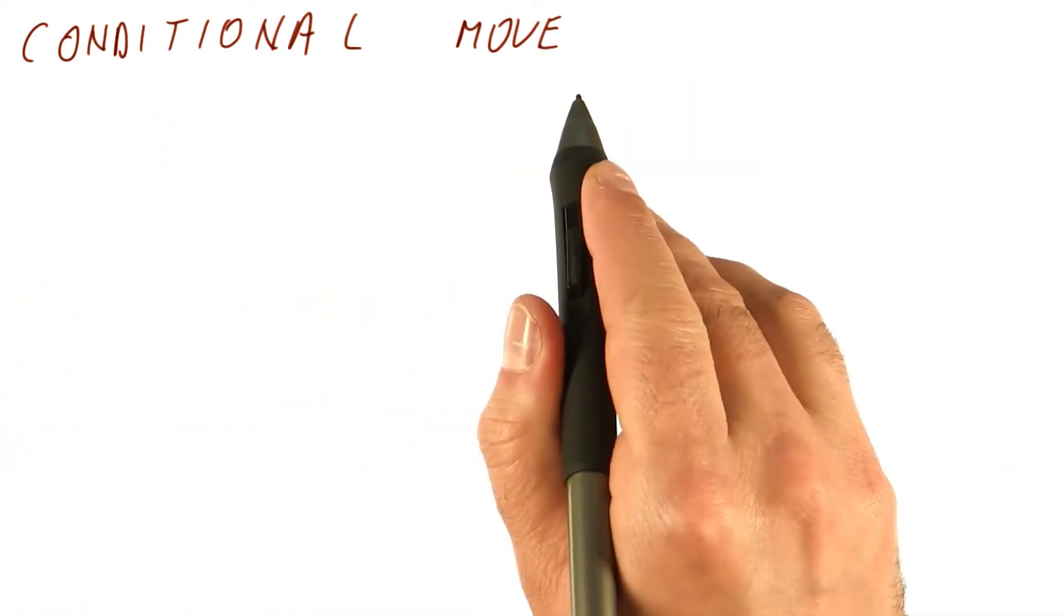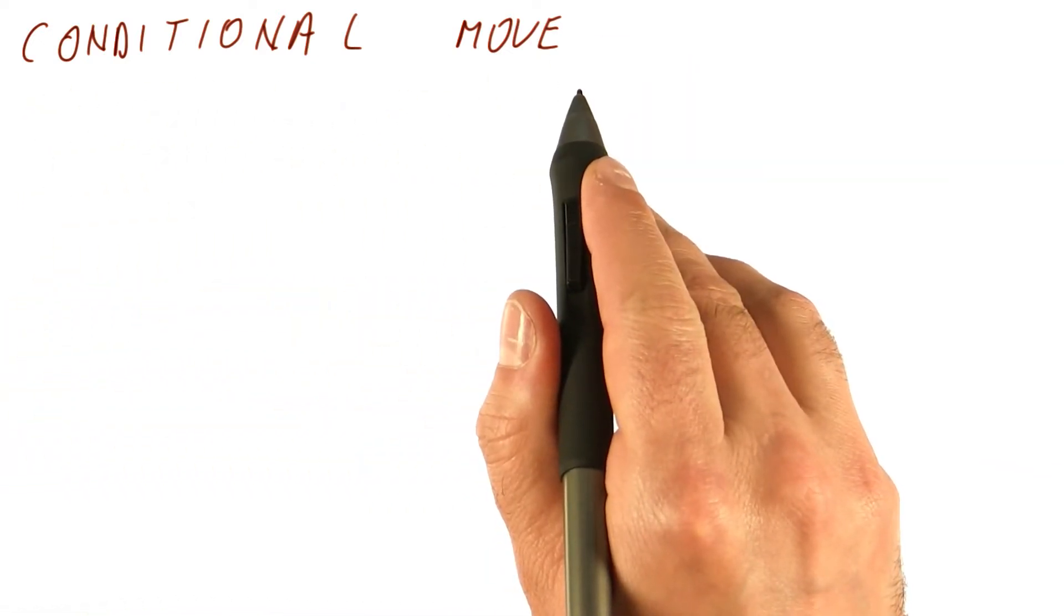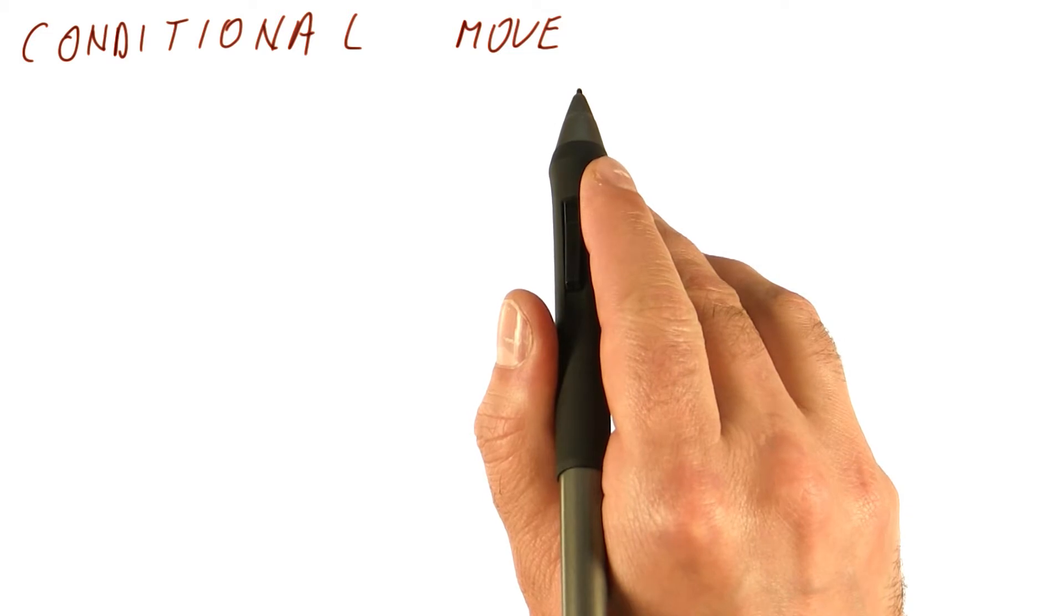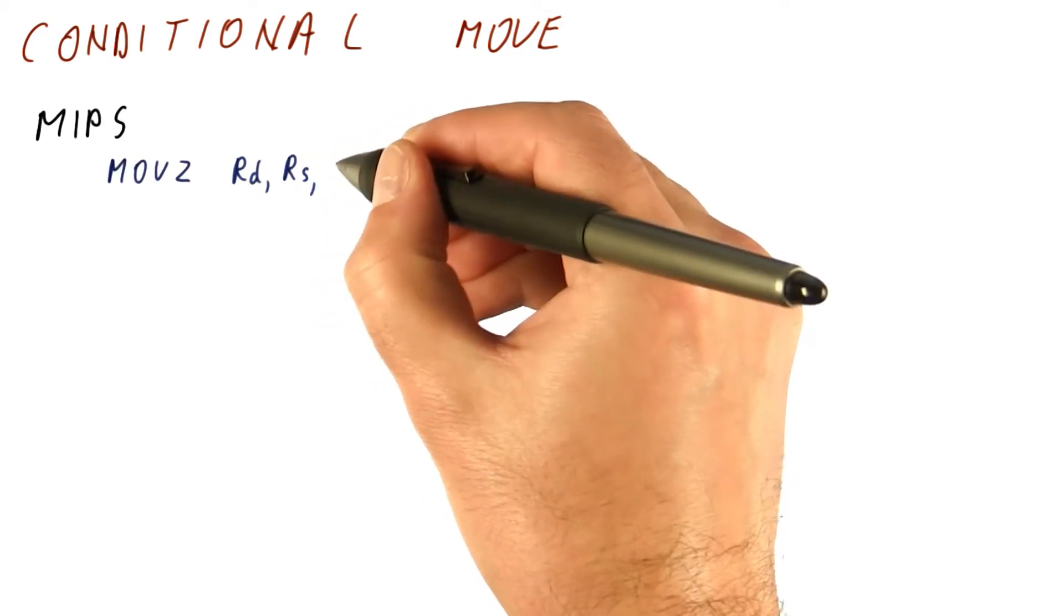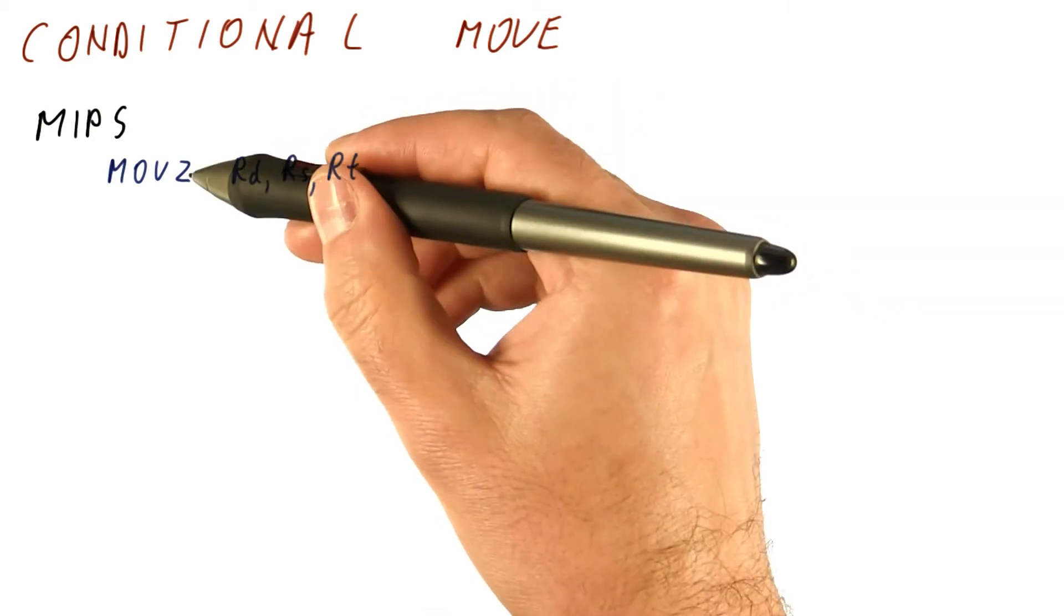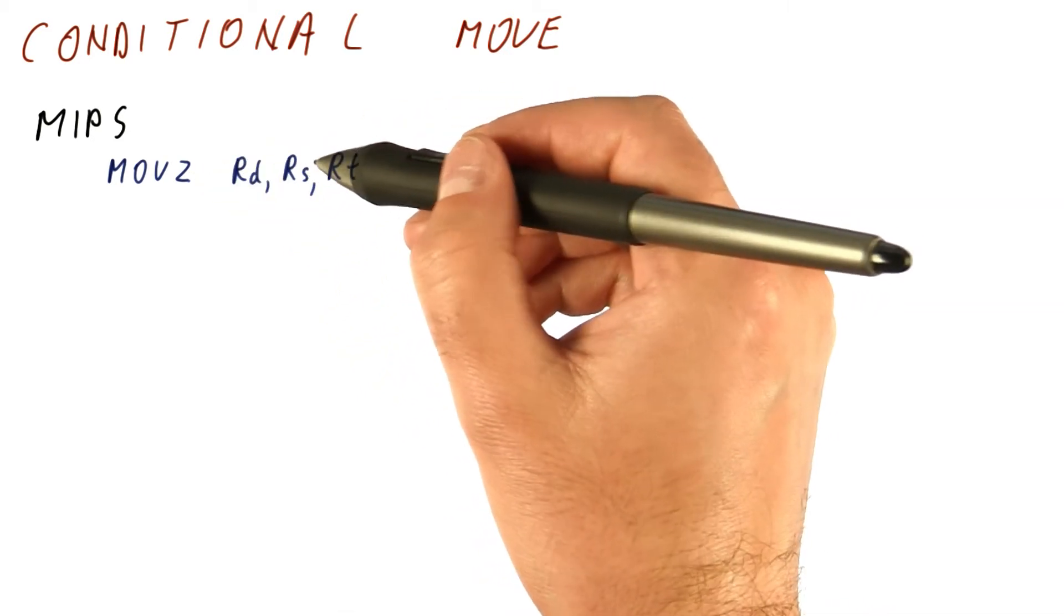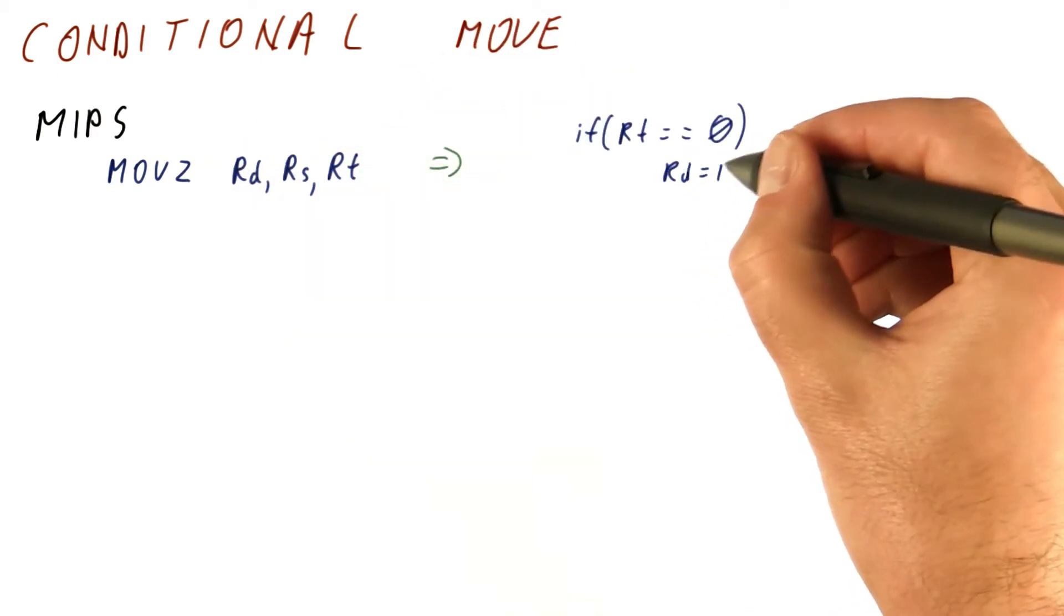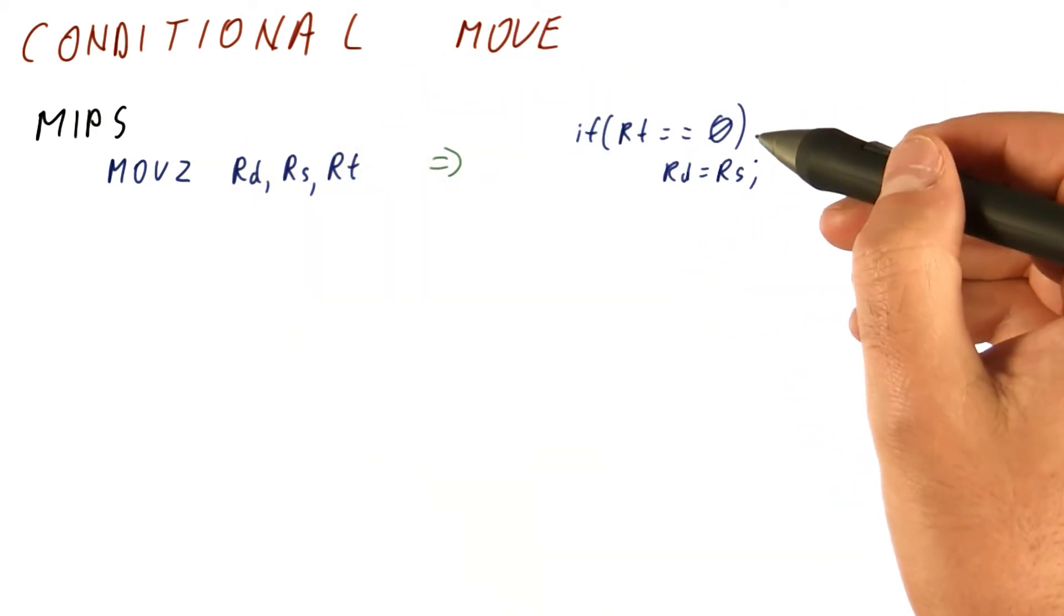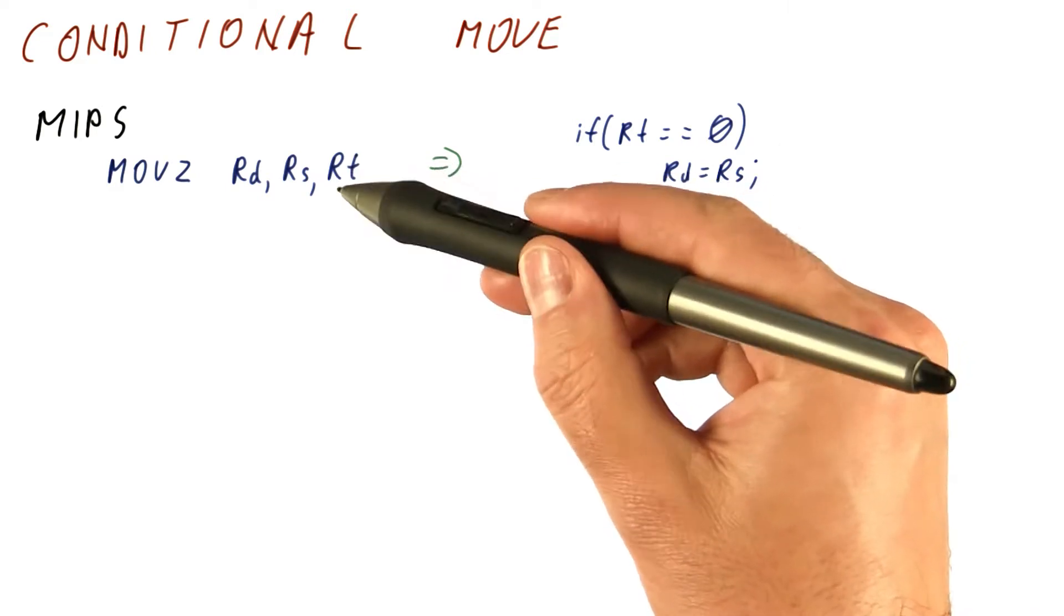So the simplest form of predication supporting hardware will be a conditional MOVE instruction. In the MIPS instruction set, for example, there is a MOVE Z instruction that takes two sources and the destination register.